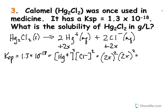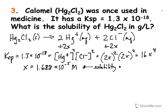This simplifies to 16 times x to the fourth. Solving for x, x is equal to 1.688 times 10 to the negative 5 molar. This is the solubility of mercuric chloride in terms of molarity.